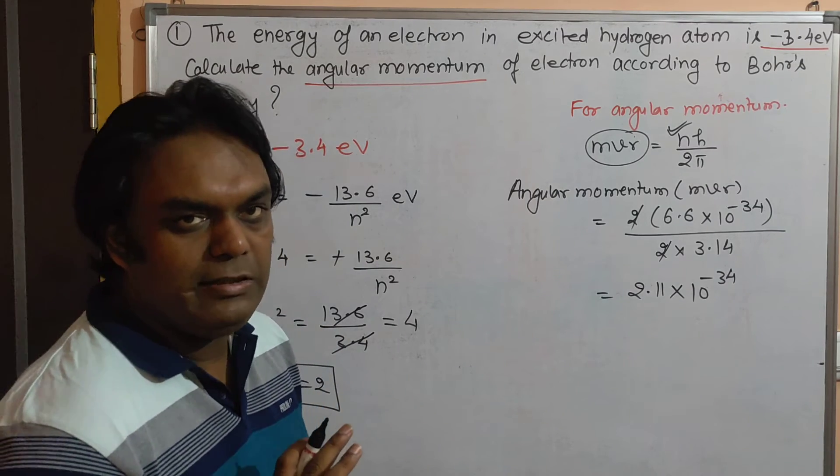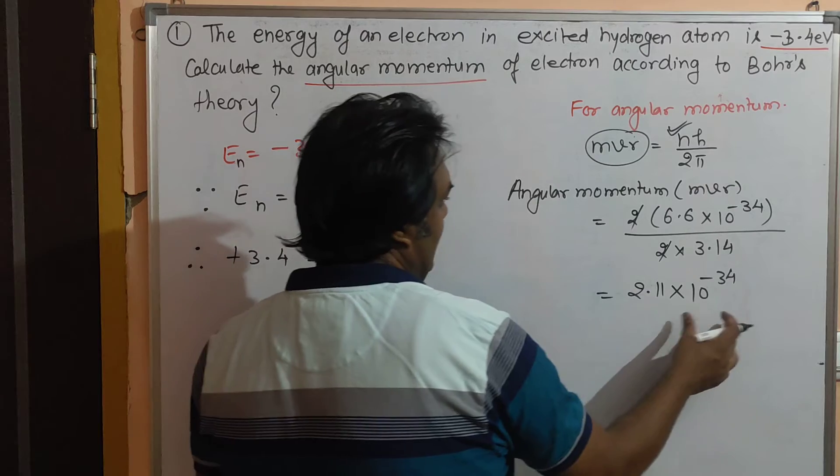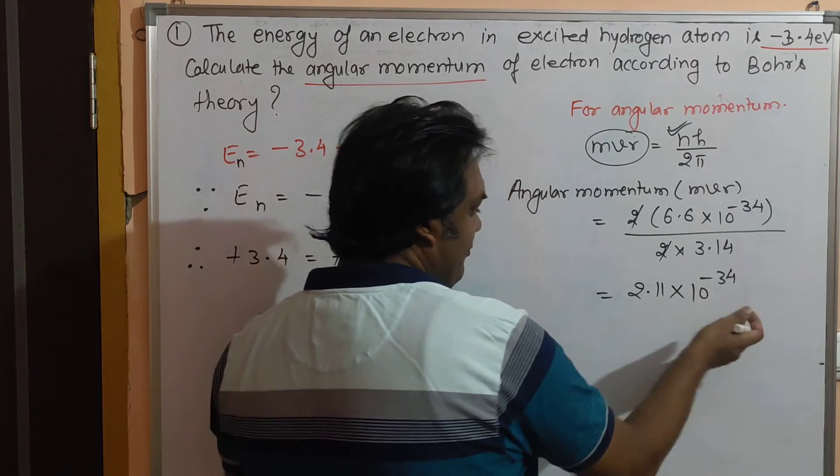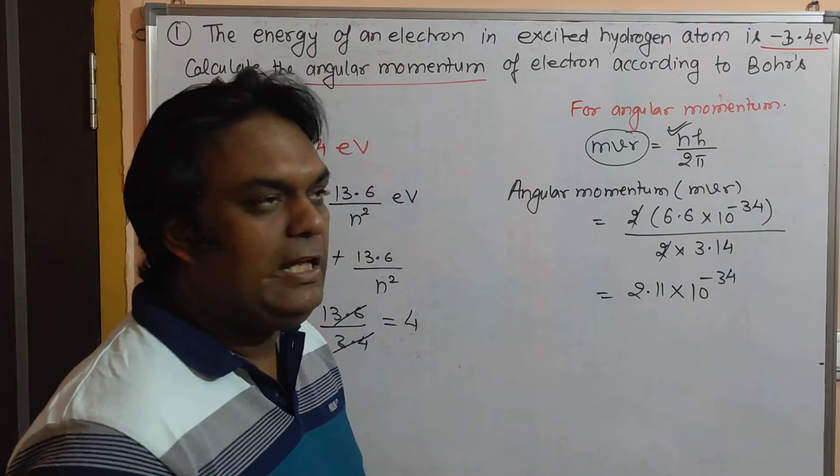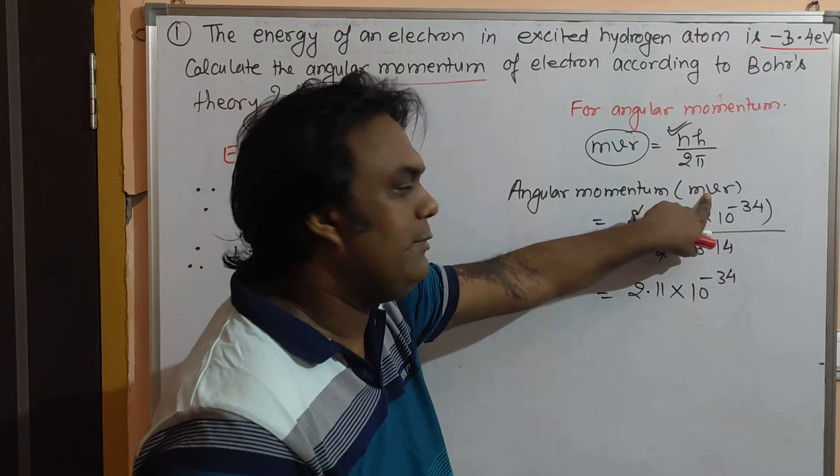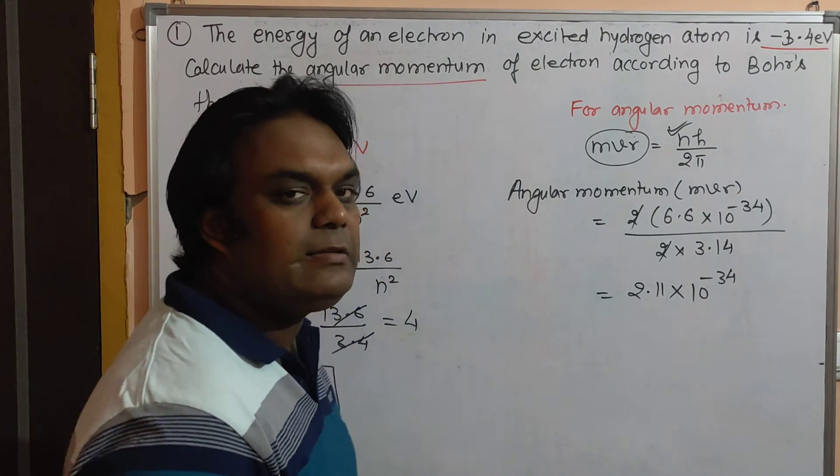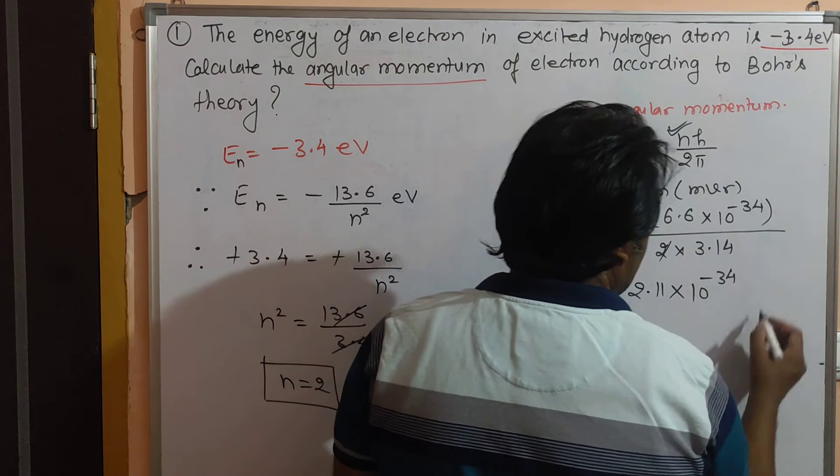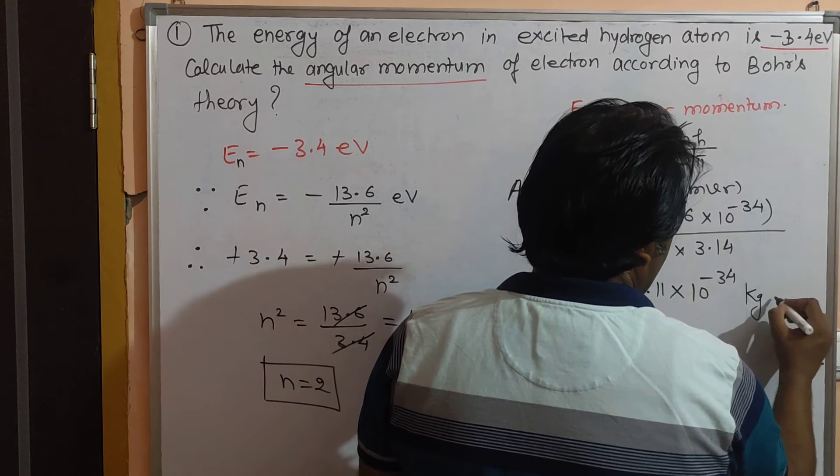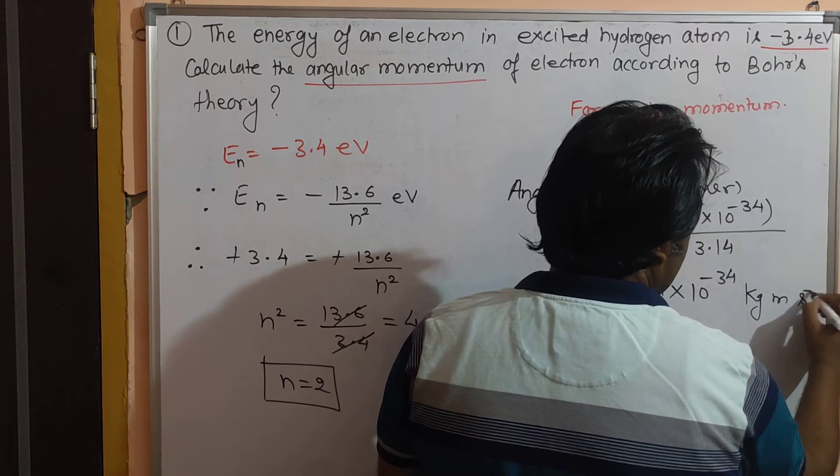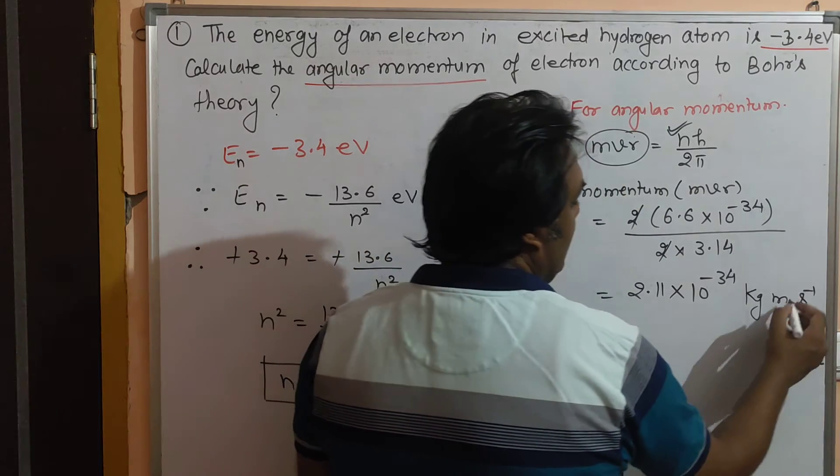The unit for angular momentum: MVR is linear momentum (kg·m/s) times distance (meter), so this will be kg·m² per second.